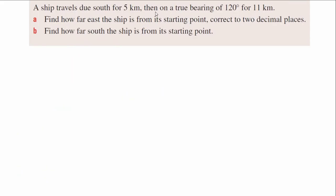Now let's have a go at this word problem. A ship travels due south for 5 kilometers, then on a bearing of 120 degrees for 11 kilometers. Let's start drawing the diagram — going south for 5 kilometers, and from that point facing north it travels on a true bearing of 120 degrees, roughly in that direction, for 11 kilometers. We're trying to find how far east the ship is from the starting point.